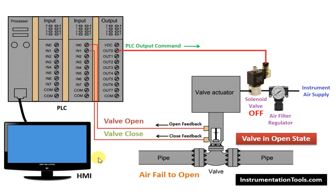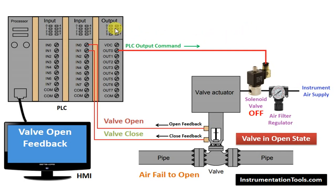In the graphic — say, in the HMI — the valve feedback is shown. Generally, in the graphic, some color changes will be there, like green color. The status of this valve symbol will change to green color, for example. Now let us say the operator gives a close command to the valve. But before that, we will see that the instrument air supply is available here.